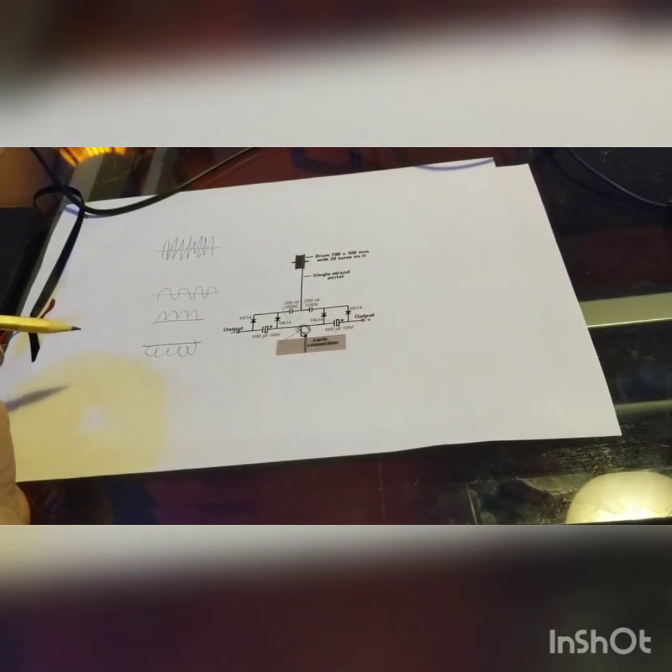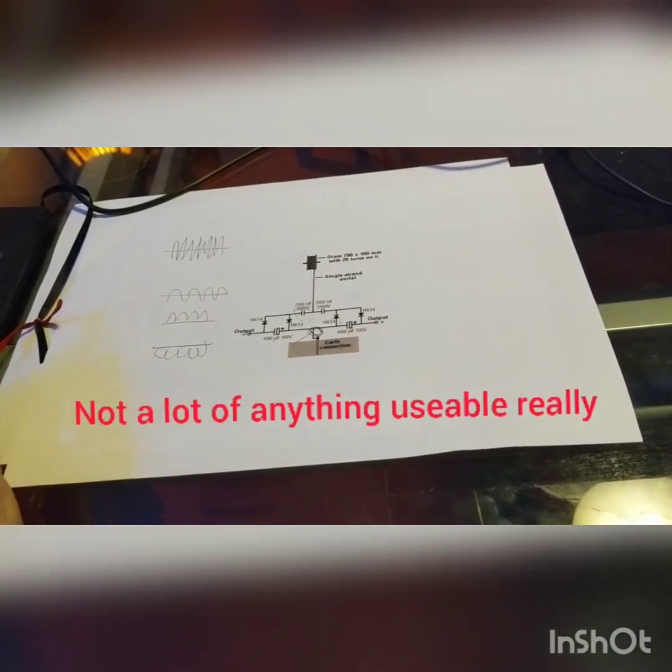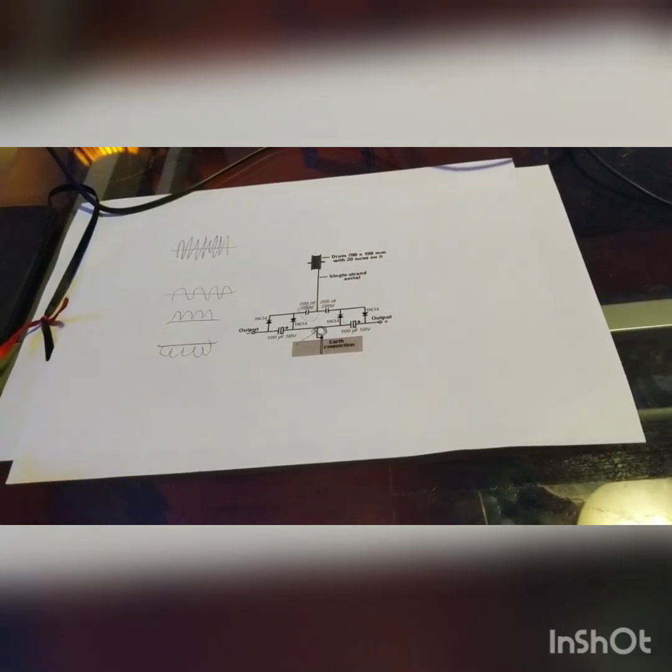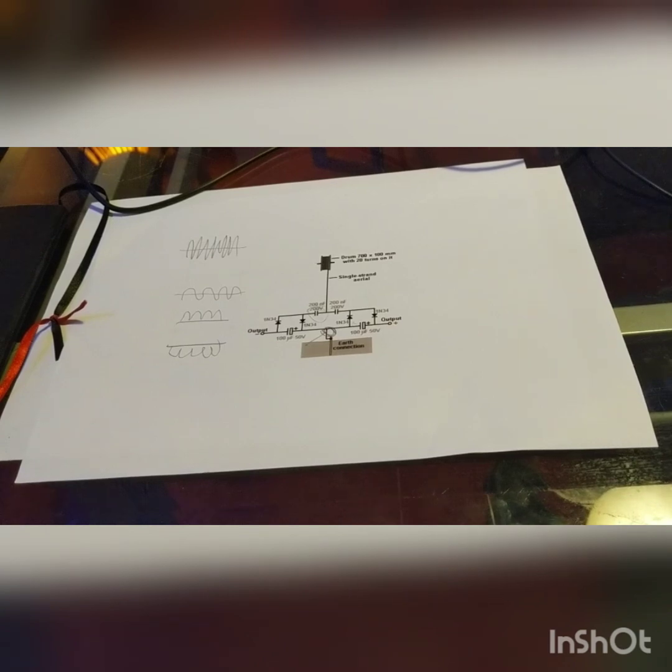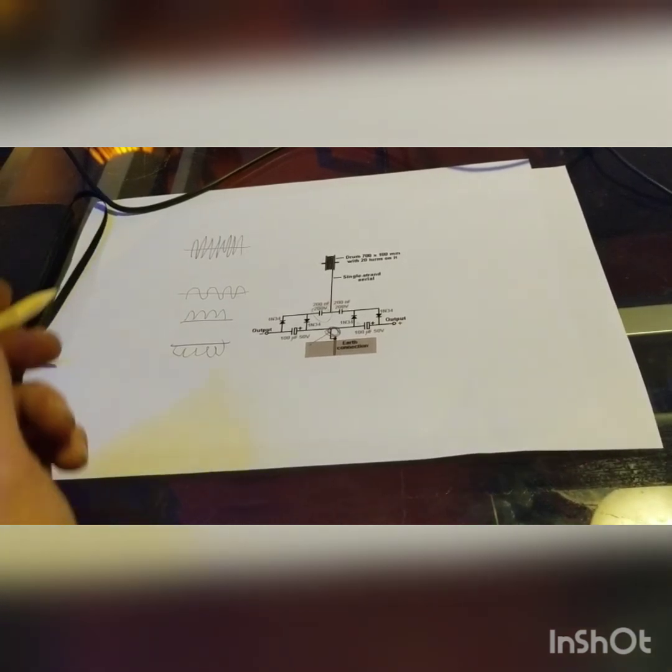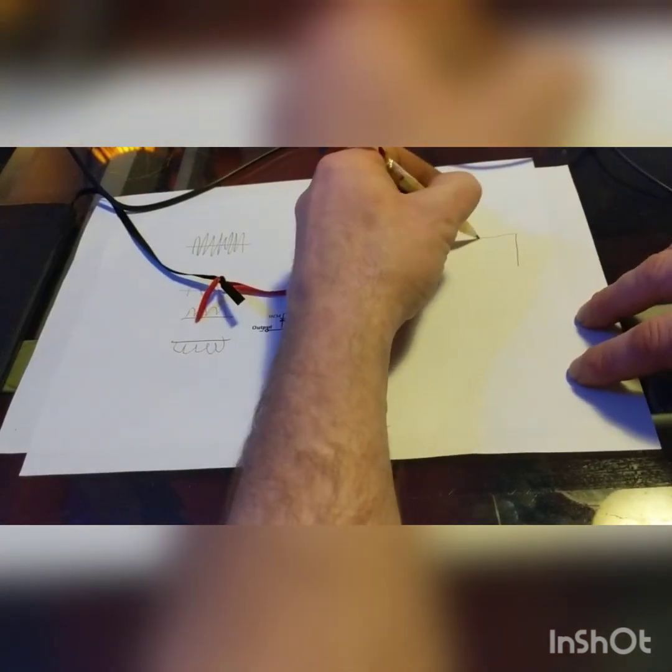There is a more simple aluminum plate one that is a lot easier to build. I just cannot seem to find it. I'll draw it right quick. So you've got an aluminum plate going into effectively another bridge rectifier.